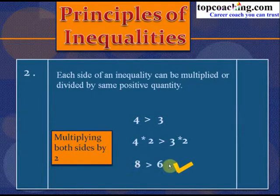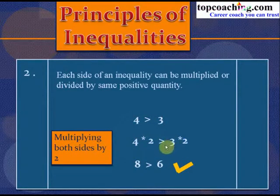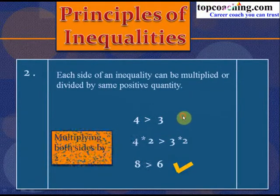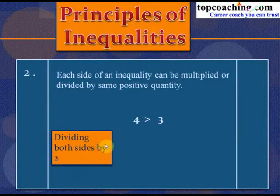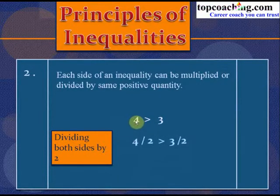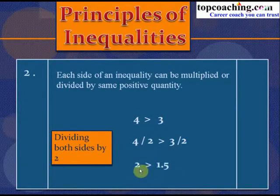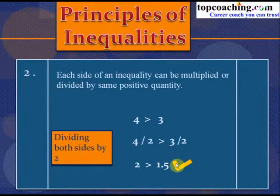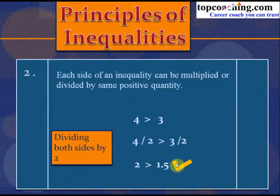Dividing both sides of 4 > 3 by 2 gives 2 > 1.5, which is also true. So if both sides of an inequality are multiplied or divided by the same positive quantity, the inequality remains the same — it does not change.